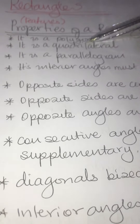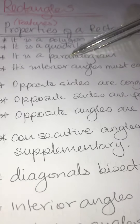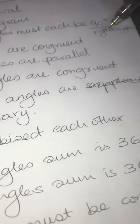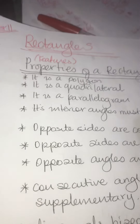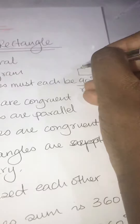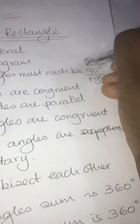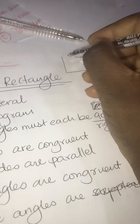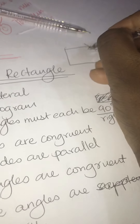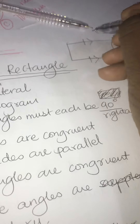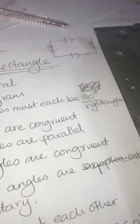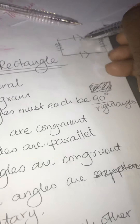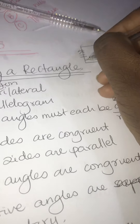It is a polygon, it is a quadrilateral because it has four sides, and it is a parallelogram. Its interior angles must each be 90 degrees — each must be a right angle. If they are not 90 degrees then the shape is not a rectangle. Let me draw a rectangle correctly. Opposite sides must be congruent and must be parallel, and you should have a 90-degree angle marker.